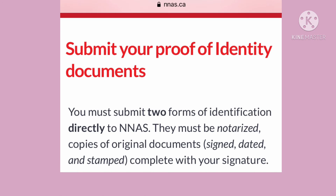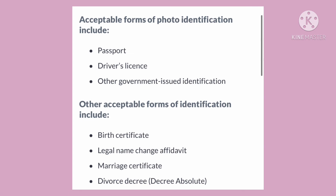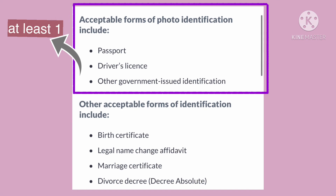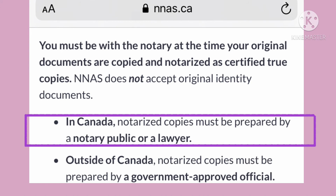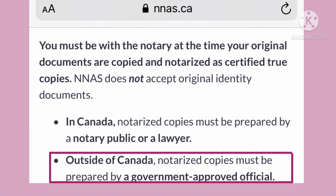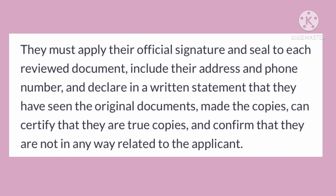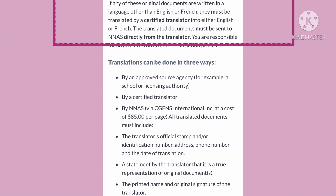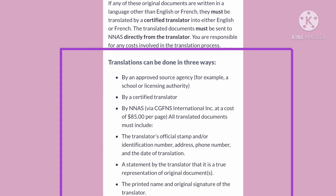Now let's go to the proof of identity documents. You must submit two types of identity documents directly to NNAS. All documents must be valid and not expired, and at least one must have your photo. If you are inside Canada, notarized copies must be prepared by a notary public or a lawyer. If you are outside Canada, it can be done by a government-approved official. These documents must be written in English; if not, they must be translated by an approved source agency of NNAS.